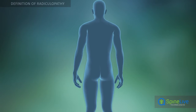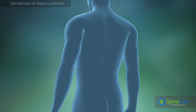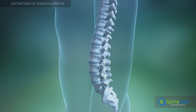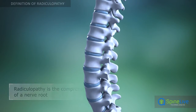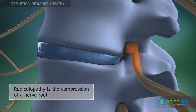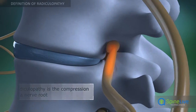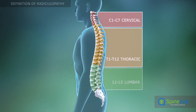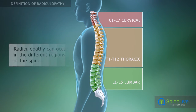Radiculopathy is a condition that occurs when an intervertebral nerve root in one of the various regions of the spine is compressed or pinched. There are three types of radiculopathy: cervical, thoracic, and lumbar. They occur due to compression of nerve roots in these respective portions of the spine.